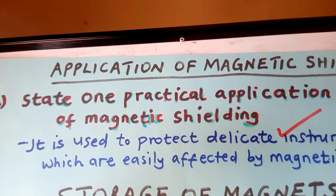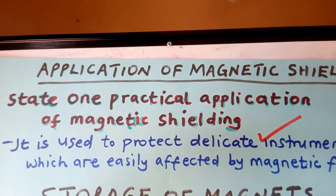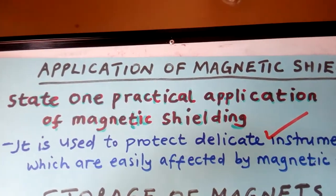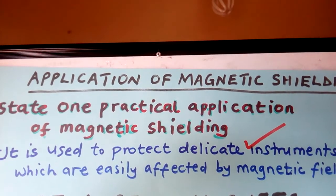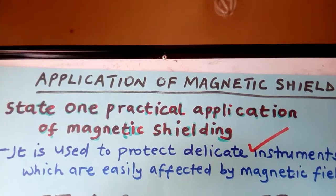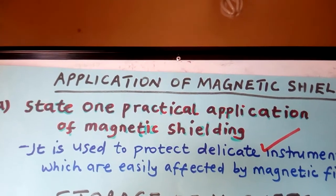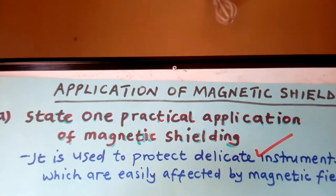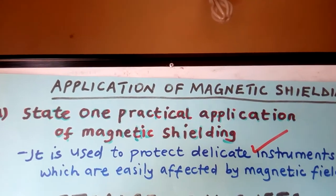The next thing is the application of magnetic shielding — where do you use it? Magnetic shielding is used to protect delicate instruments which are easily affected by magnetic fields. If you have a delicate instrument that can be affected by a magnetic field and you want to protect it, you perform magnetic shielding: you put the instrument inside an iron ring, and place that iron ring between two bar magnets with north and south poles facing each other.